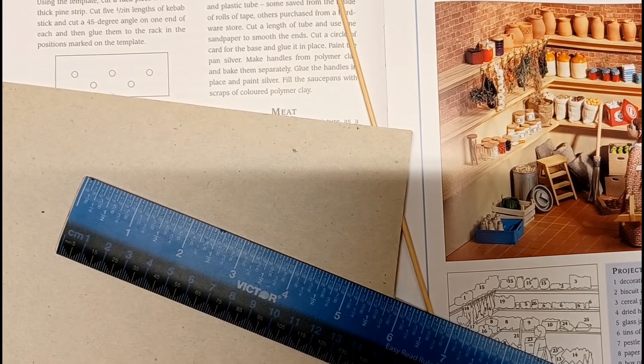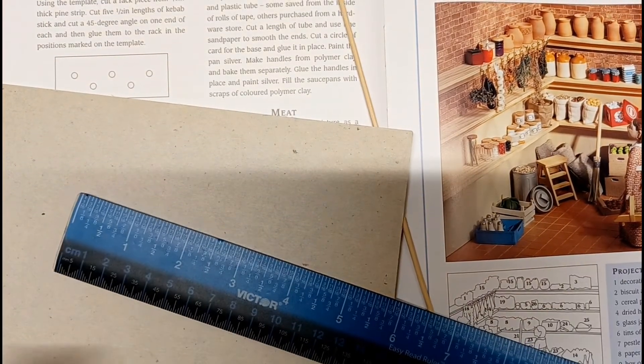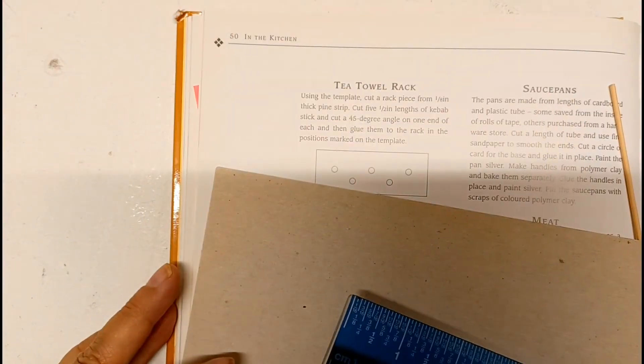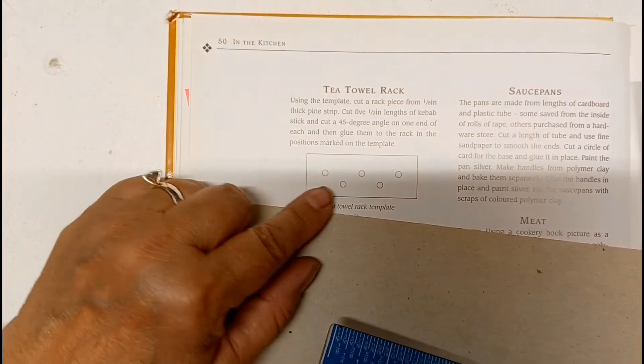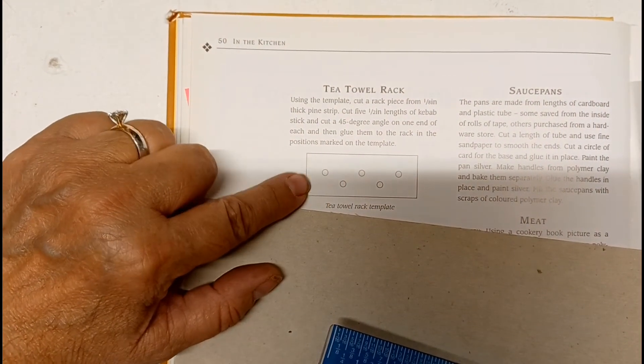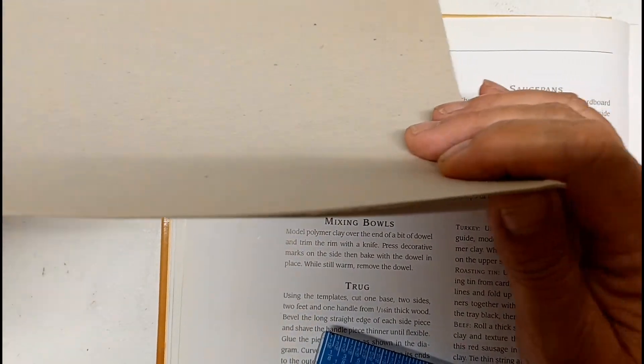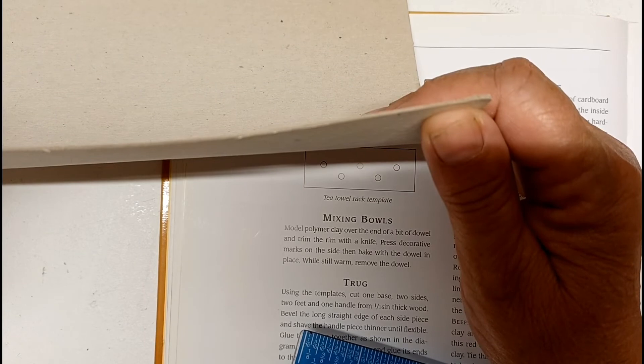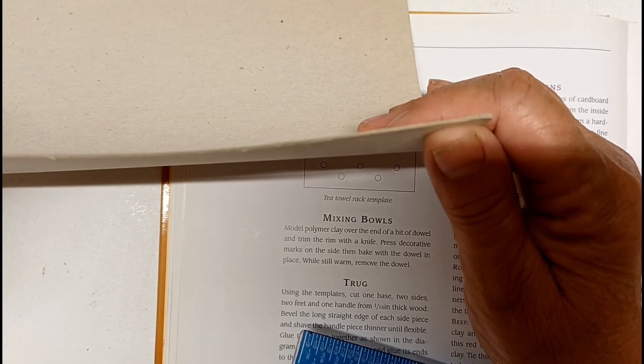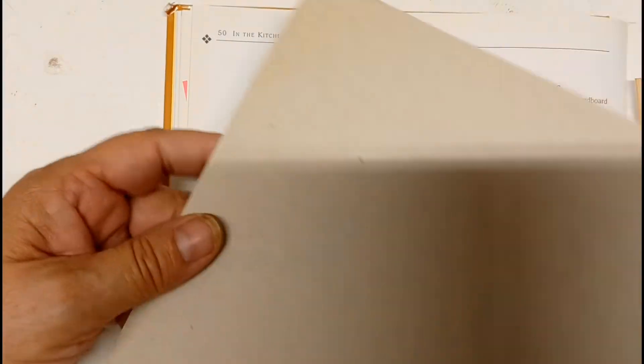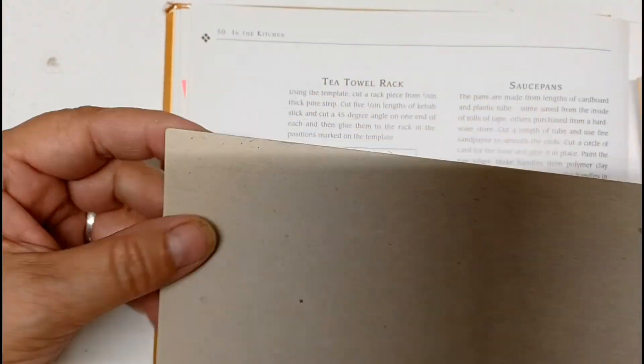Hi guys and welcome back to Fox House Creations where today we're going to make a towel rack. We're going to need some cardboard, kind of thick but not super thick. This is just chipboard from a package of some kind.